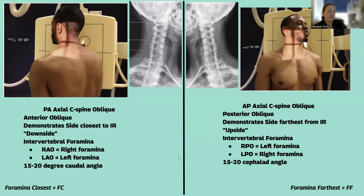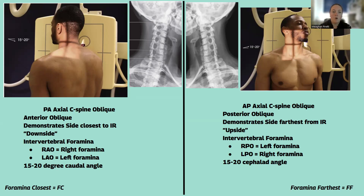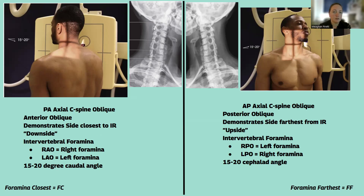Same concept with spine. For cervical spine obliques, you can do a posterior or anterior oblique. If the question asks about a PA axial C-spine oblique, that's your anterior oblique. These oblique C-spine views are used to demonstrate the intervertebral foramina. When the patient is PA or in an anterior oblique — LAO or RAO — it demonstrates the side closest to the IR or the downside. So RAO shows the right because the right anterior is touching. You'll also do a 15 to 20 degree caudal angle, and on an anterior oblique you're seeing the closest foramina.